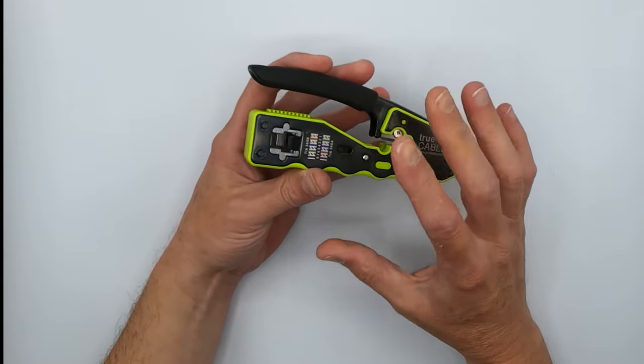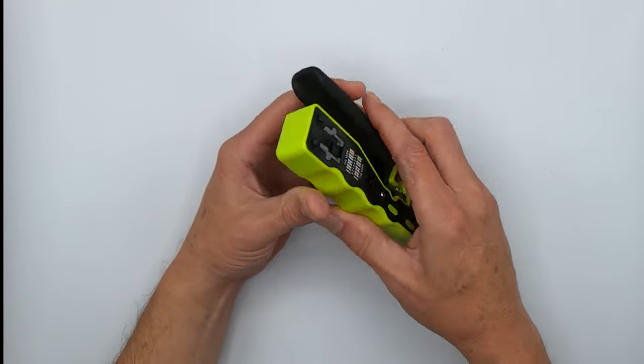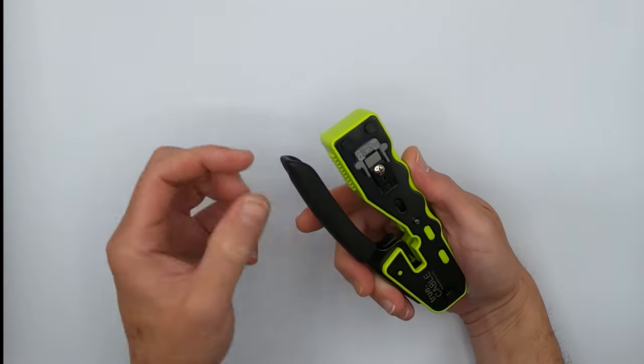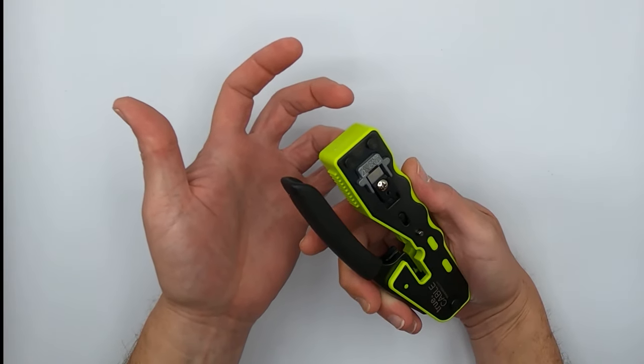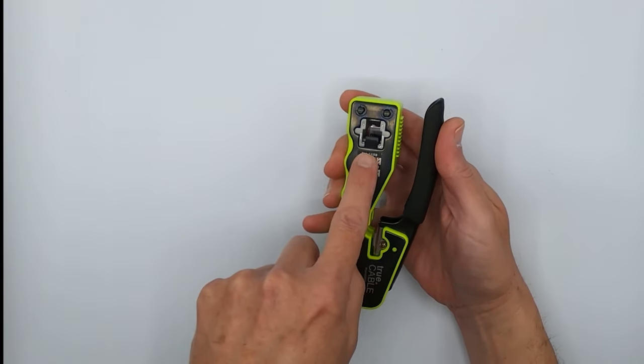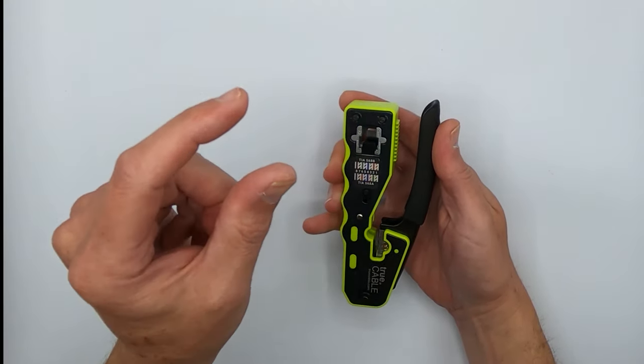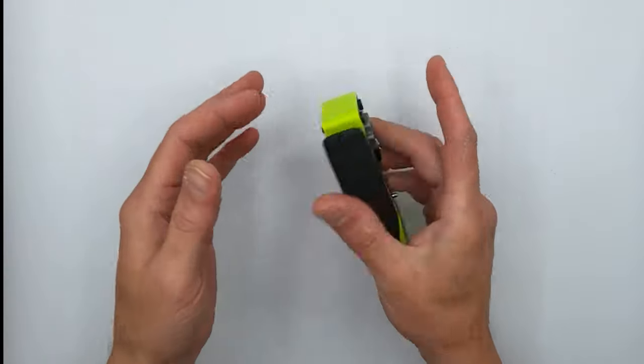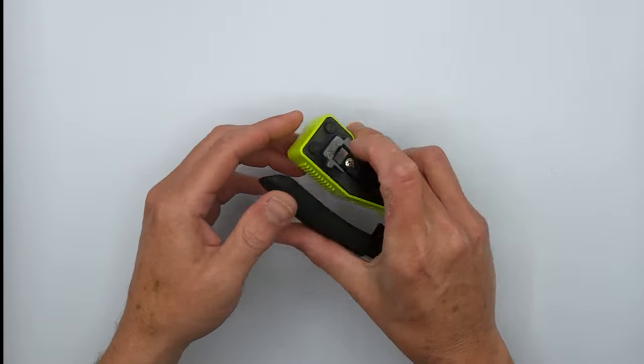This pass-through crimper will handle standard plugs. In that case, you won't use this flush cut blade. The plug will simply stop, then you'll press it down. It'll terminate, engage the strain latch in the back of the plug, and terminate your contacts, but it won't shave anything off. With a pass-through plug, it'll shave off the conductors.